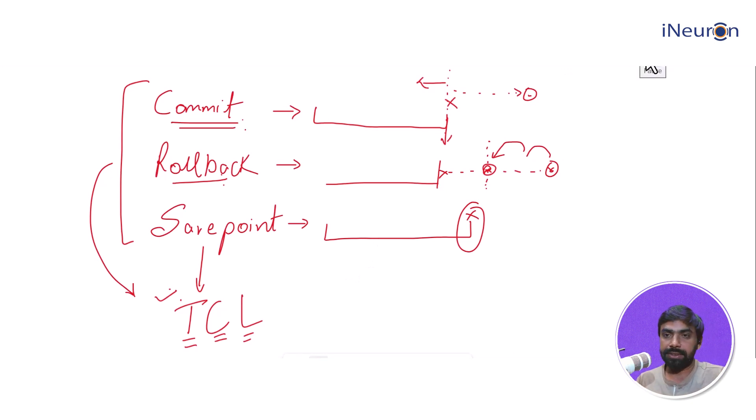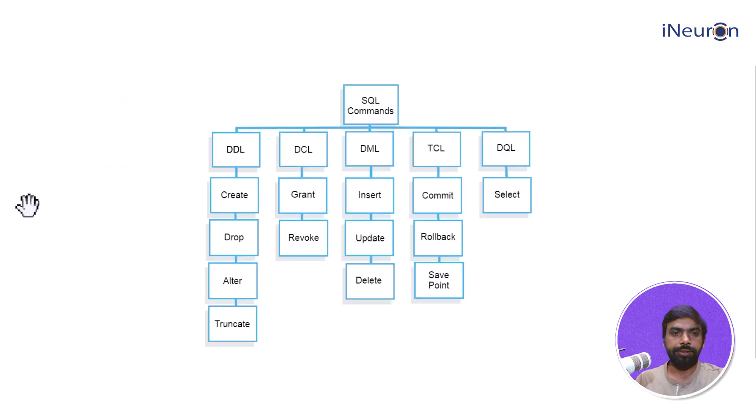Okay, now let's revise what you have seen till now. Let's see all the five kinds of commands and let's spend a minute to revise. So all the SQL commands can be classified under five major categories which are DDL Data Definition Language, DCL Data Control Language, DML Data Manipulation Language, TCL Transaction Control Language, and DQL Data Query Language.